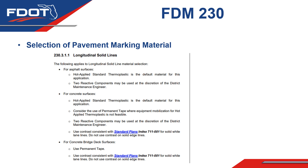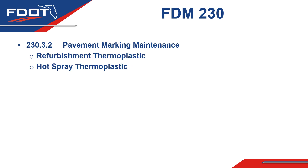The subsections following the table provide additional guidance to further clarify proper pavement marking material selection. Section 230.3.2 is a new section that provides guidance on the two products used to extend the life of existing pavement markings: refurbishment thermoplastic and hot spray thermoplastic. This new section takes information on these maintenance materials that was scattered throughout the previous version of the chapter and organizes it into a single section that is easier to follow.